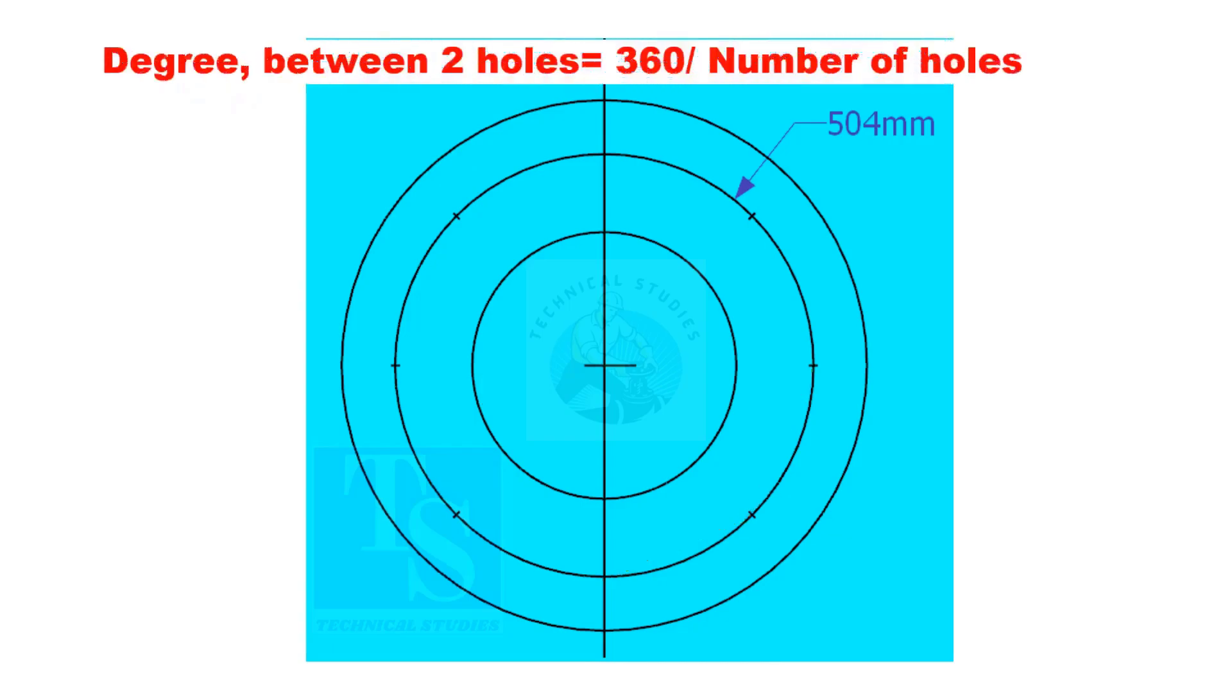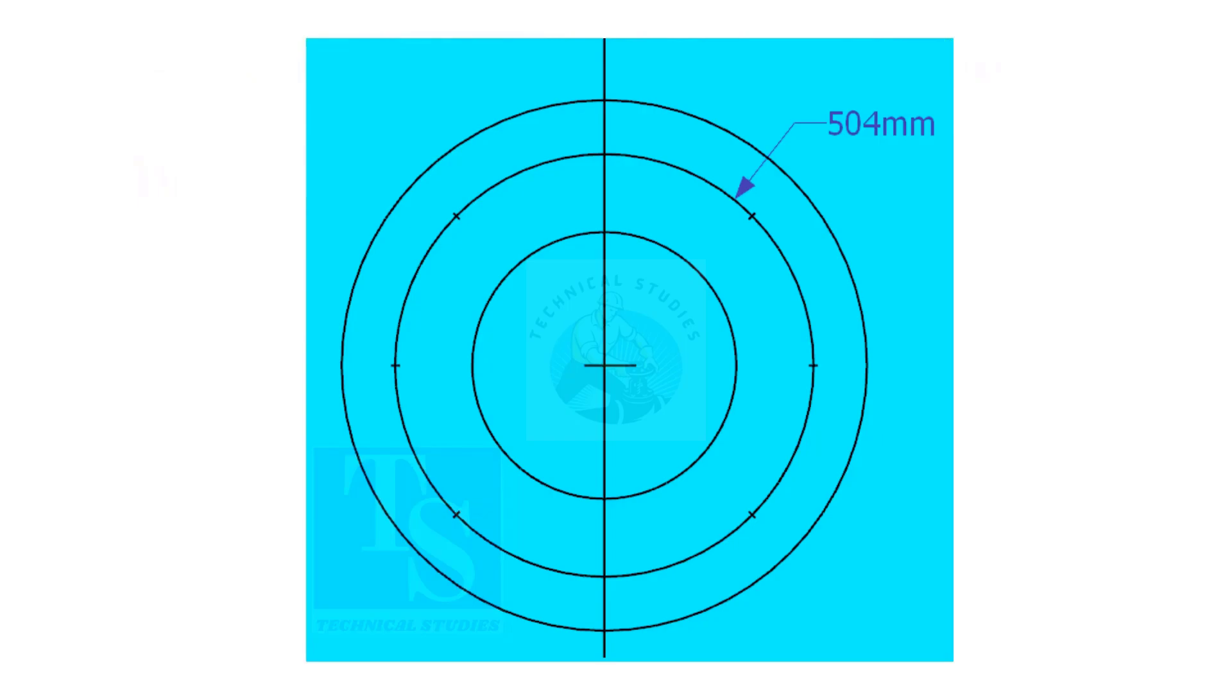If you divide 360 by the number of holes, you will get the angle between two holes. Cord length equals sine 45 divided by 2, multiplied by PCD.